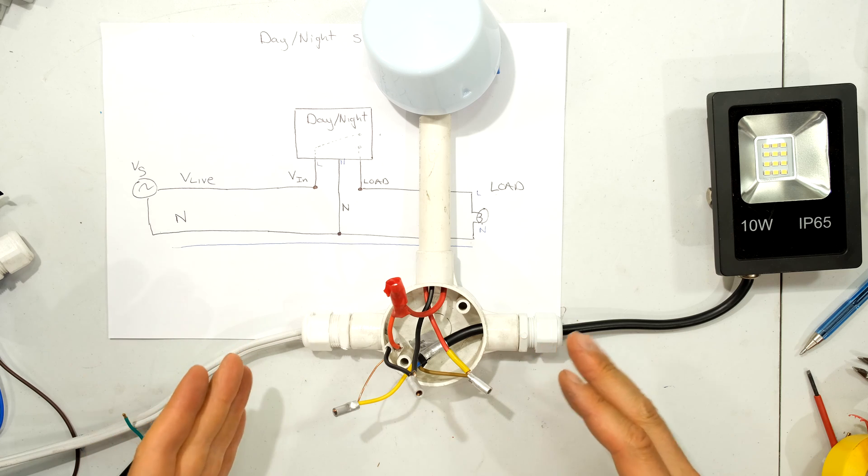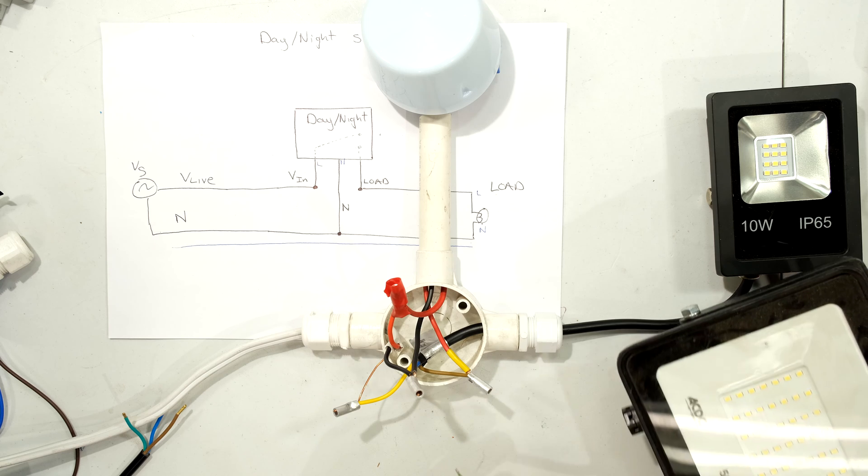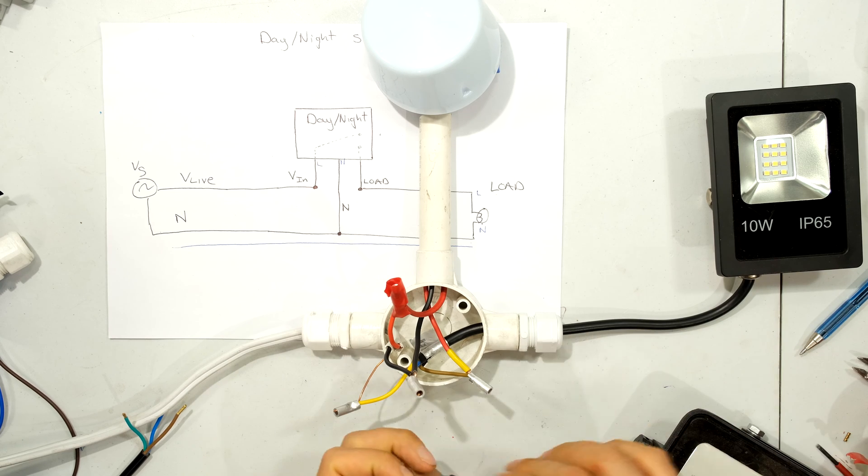Right, I've disconnected the supply. This is off. It's safe to touch. Now, if I wanted to add another light, all I need to do is actually add it in parallel. So in this case, I'd need a four-way splitter.